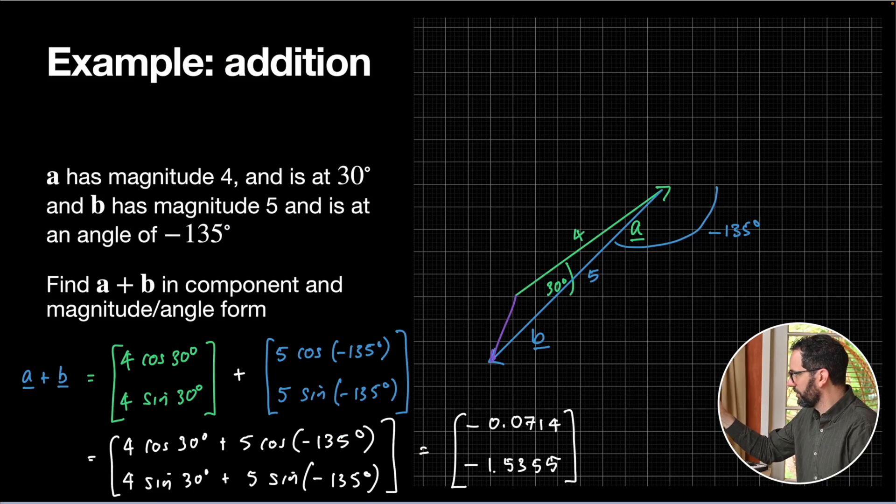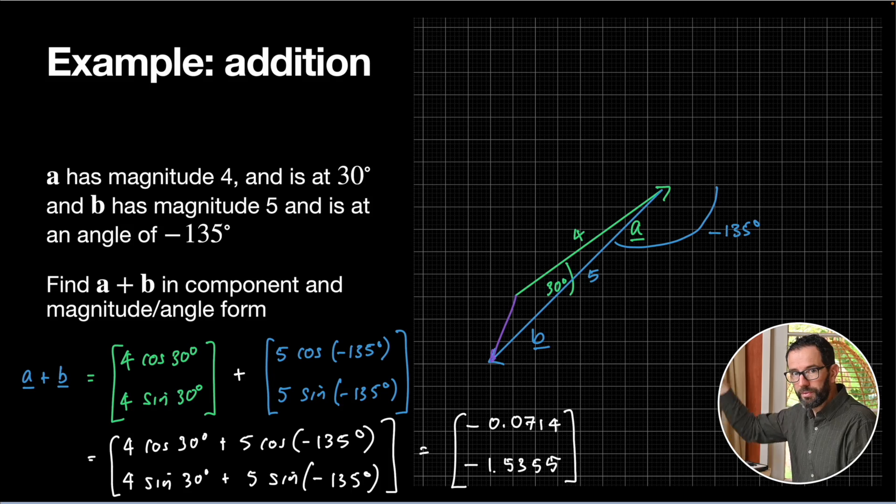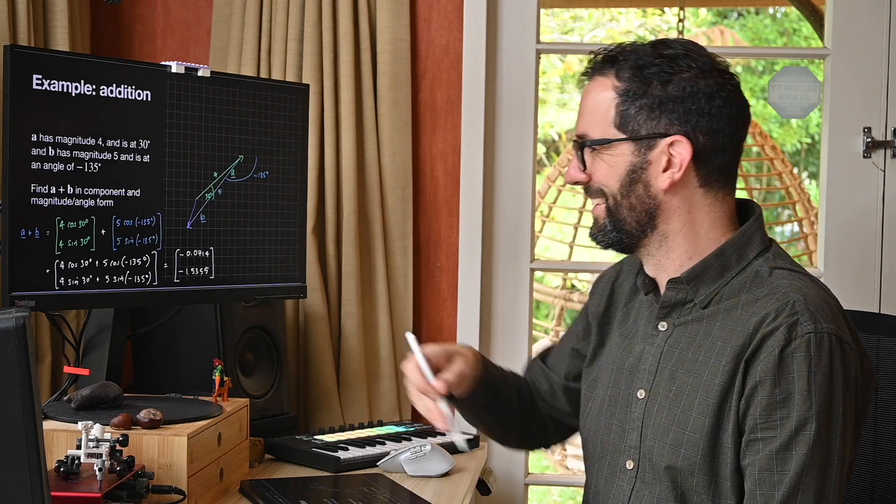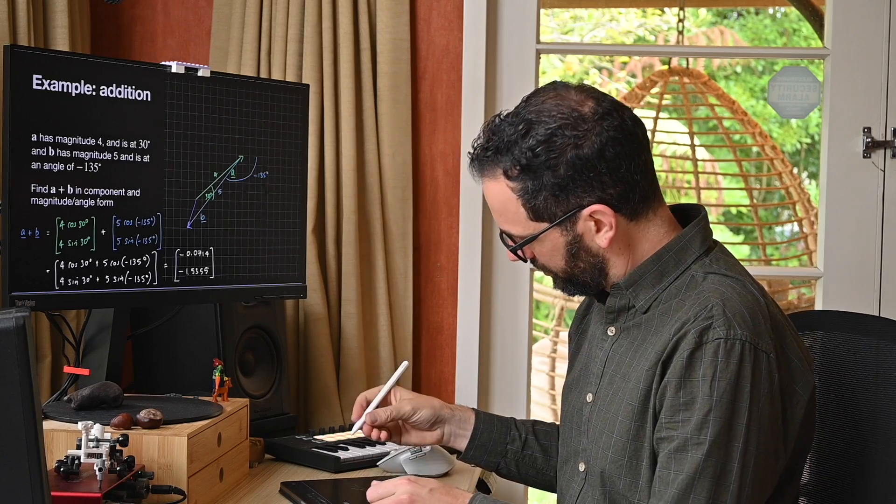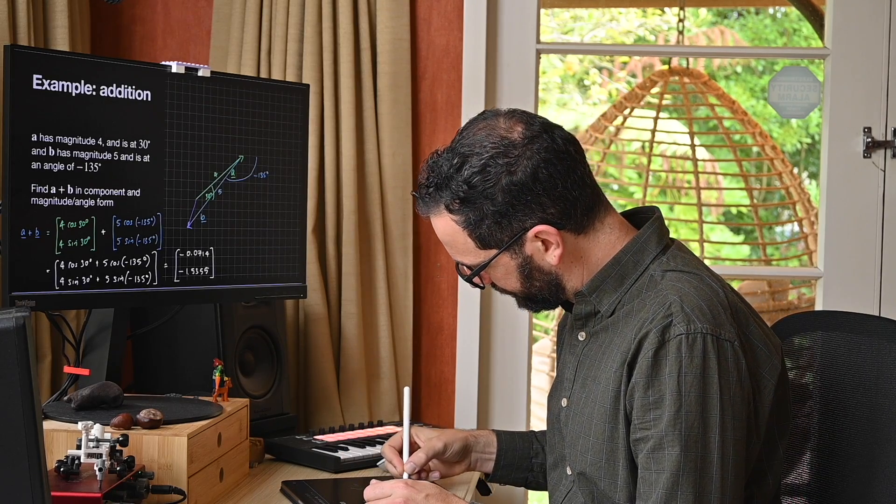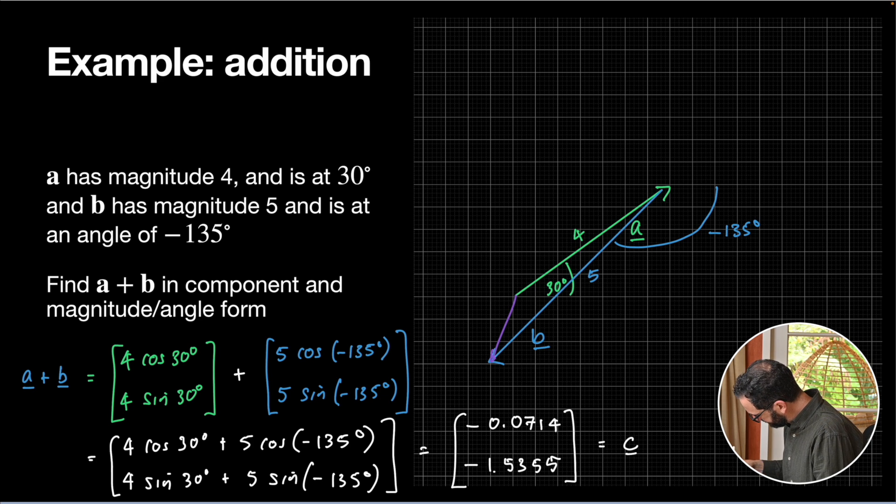All right, so now to find the magnitude and angle of this. So this is, let's just call this equals C. This can be our new vector. So C is, so what we want to do is we want to find the magnitude of C. All we're going to do is take the square root of those things. Now, if you're using a calculator, you'd include all of the decimal places here.